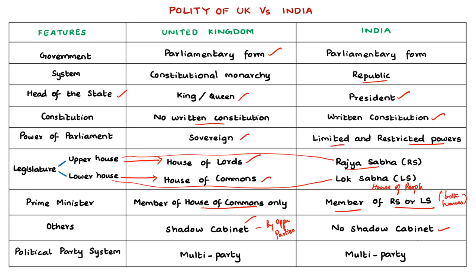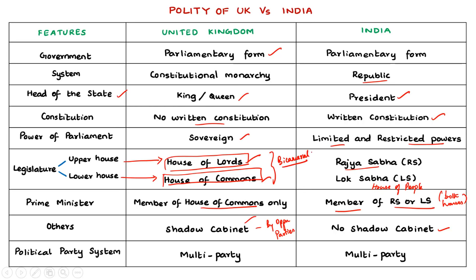The British Parliament has two houses — the House of Lords and the House of Commons — making it a bicameral system. Members of the House of Lords are usually appointed by the monarch and the post is hereditary in nature. Members of the House of Commons are elected by the general public. UK also has a multi-party system similar to India. These are some of the unique features of the British Parliament compared to India.